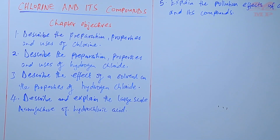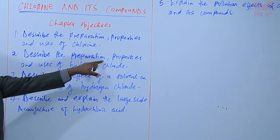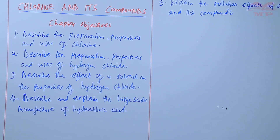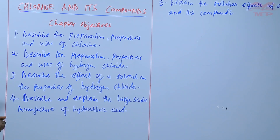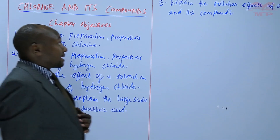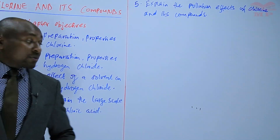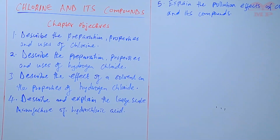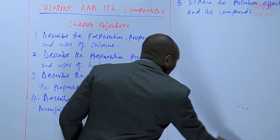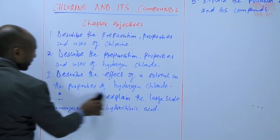Objective three is to describe the effect of a solvent on properties of hydrogen chloride. Number four, we shall describe and explain the large-scale manufacture of hydrochloric acid. And lastly, number five, we shall explain pollution effects of chlorine and its compounds. Having gone through the objectives, we'll get into the introduction.